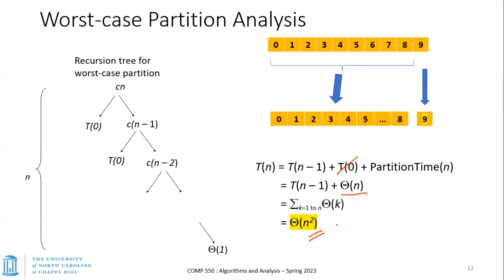So if you compare quicksort to merge sort — quicksort, despite its name, seems to be worse than merge sort in the worst case scenario. Why didn't merge sort have this problem? In merge sort, you always divided the sequence into exactly two halves — if it was an even number, two sequences each half the size. We didn't have the problem of a pivot that might not divide the problem into two roughly equal sizes. Merge sort always divided into almost equal size, whereas quicksort can fail when the pivot is consistently at one extreme.